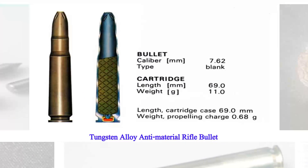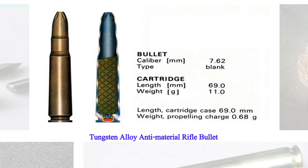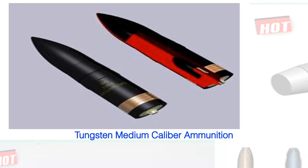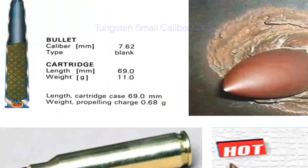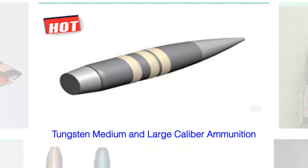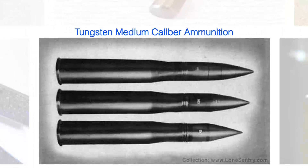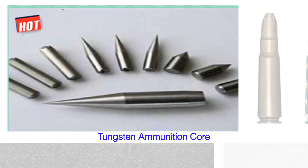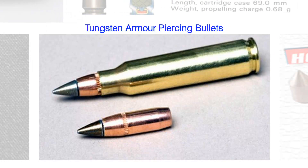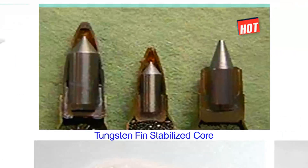Tungsten alloy is a kind of composite material where tungsten, with a mass fraction of 80% to 98%, is distributed throughout a matrix. It combines the high density and high strength of tungsten with the ductility of the matrix, giving it a series of physical, chemical, and mechanical properties. Tungsten alloy has wide usage in the military industry due to its good properties.